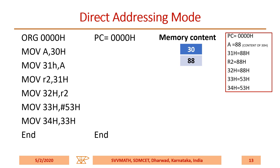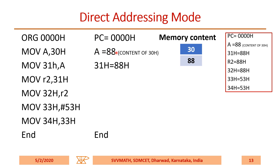Coming to the direct addressing mode. Whenever I execute ORG 000H, PC becomes 000H. Let us consider memory content: the 30H location is having 88H. What is the output after execution of MOV A, 30H? It becomes 88H because the 30H location is having 88H. MOV 31H, A — 31H will become 88H.